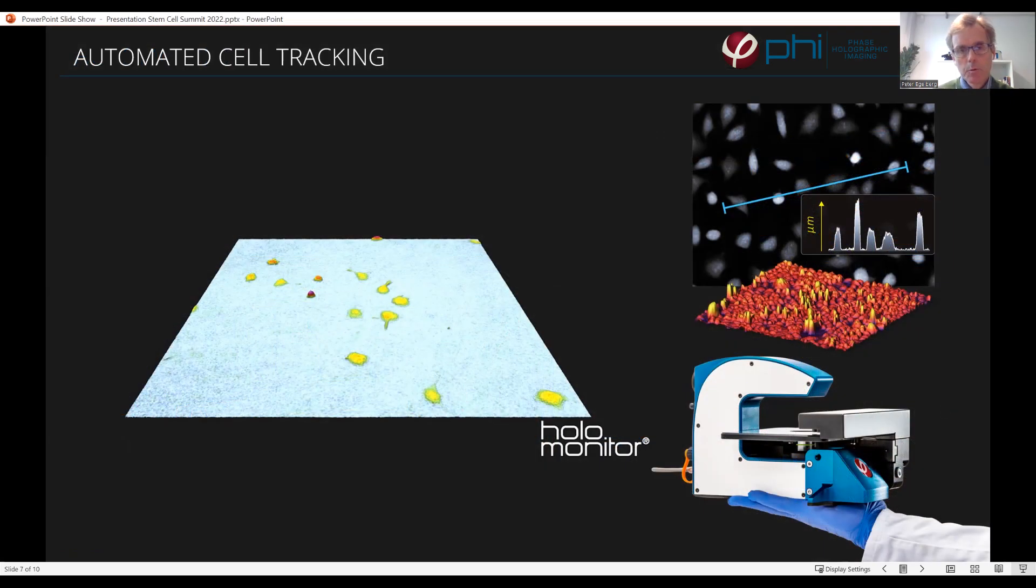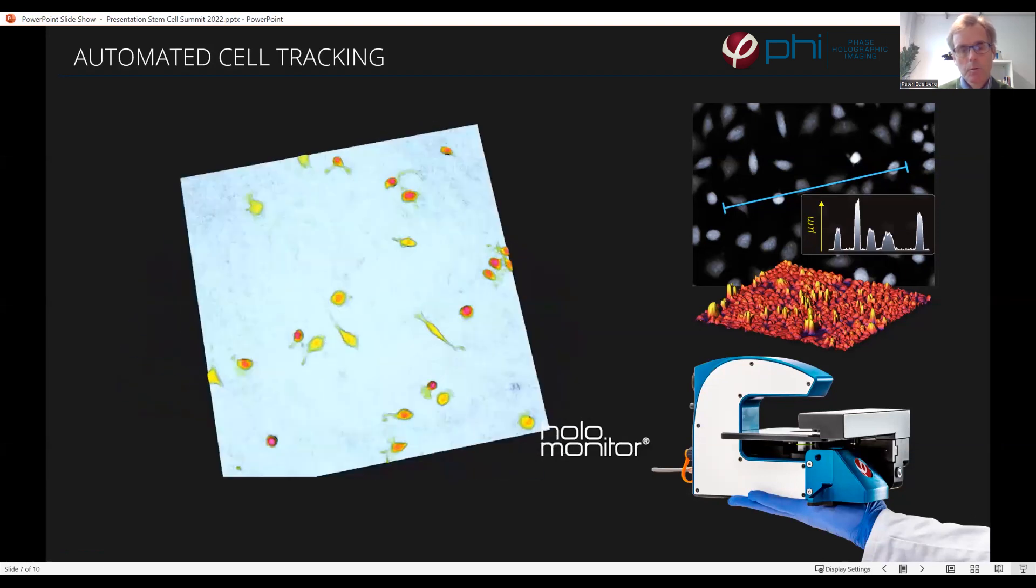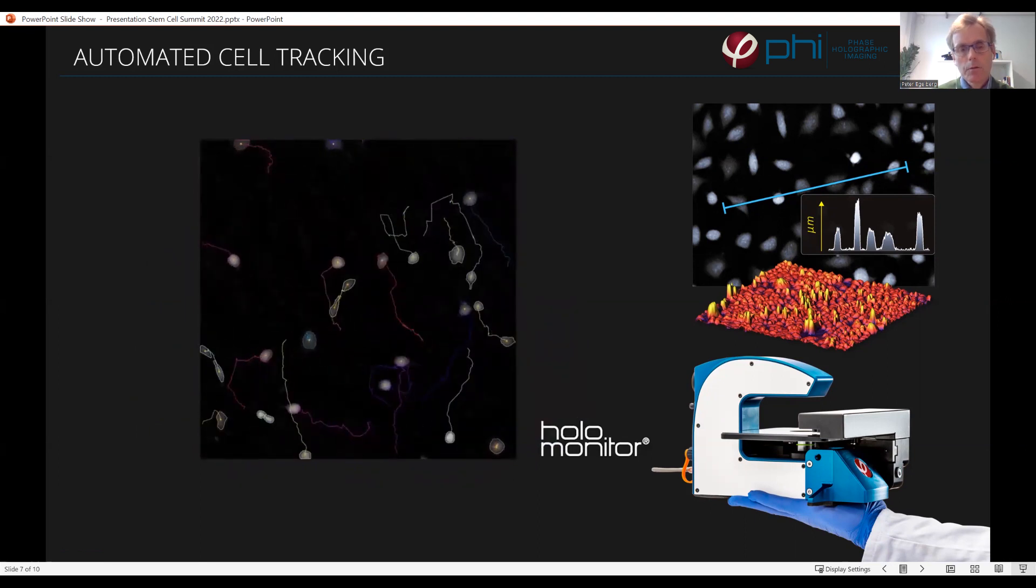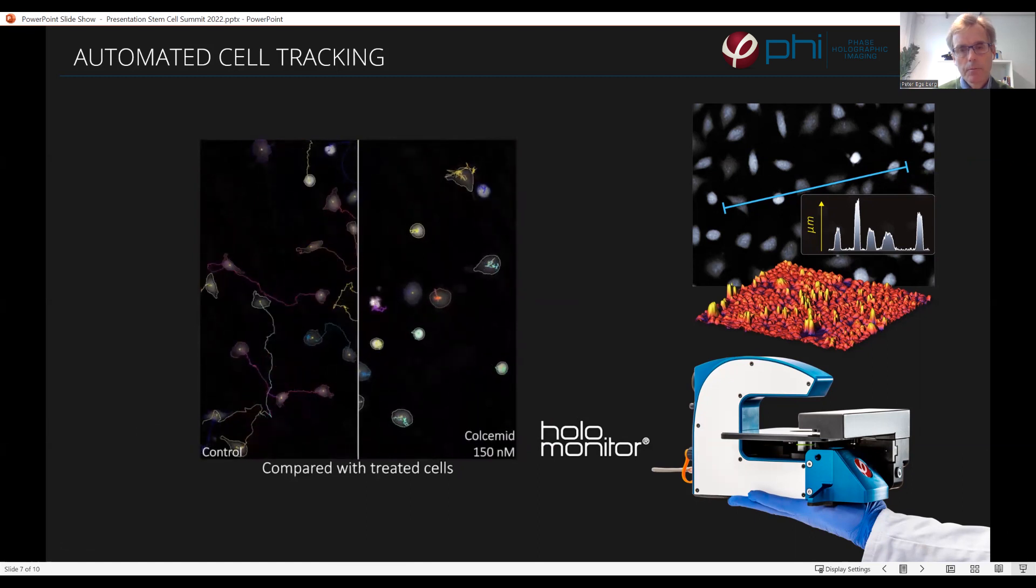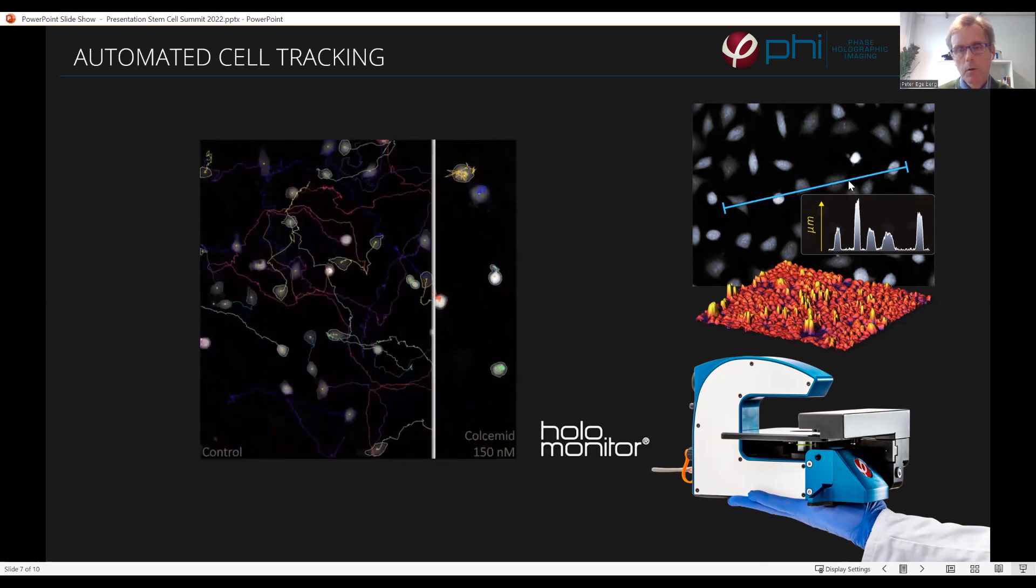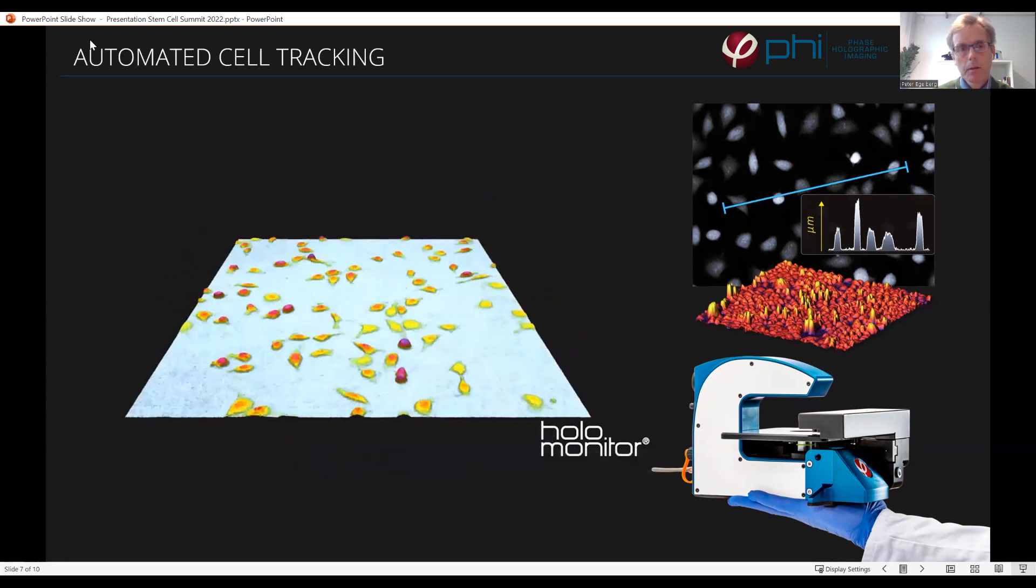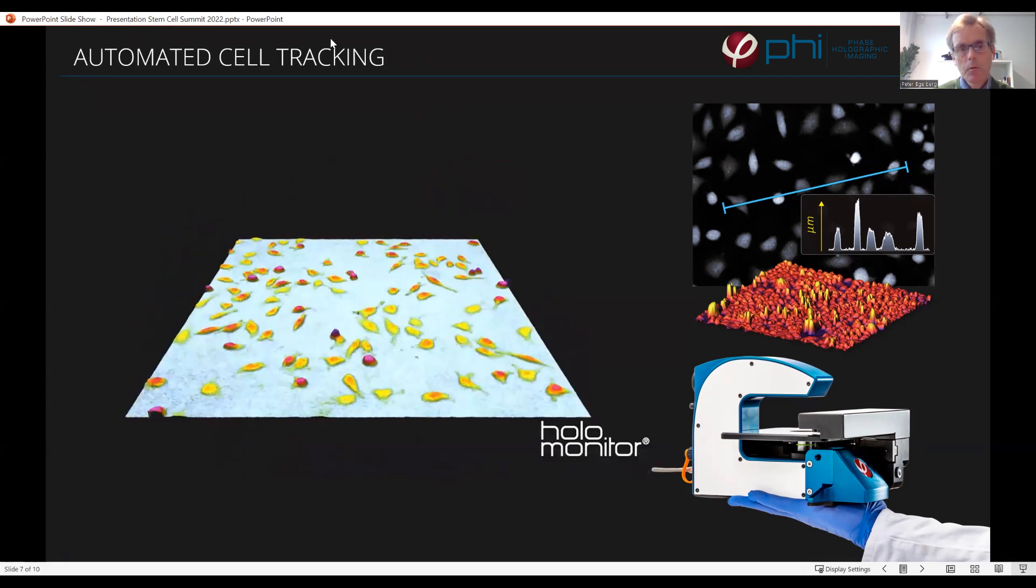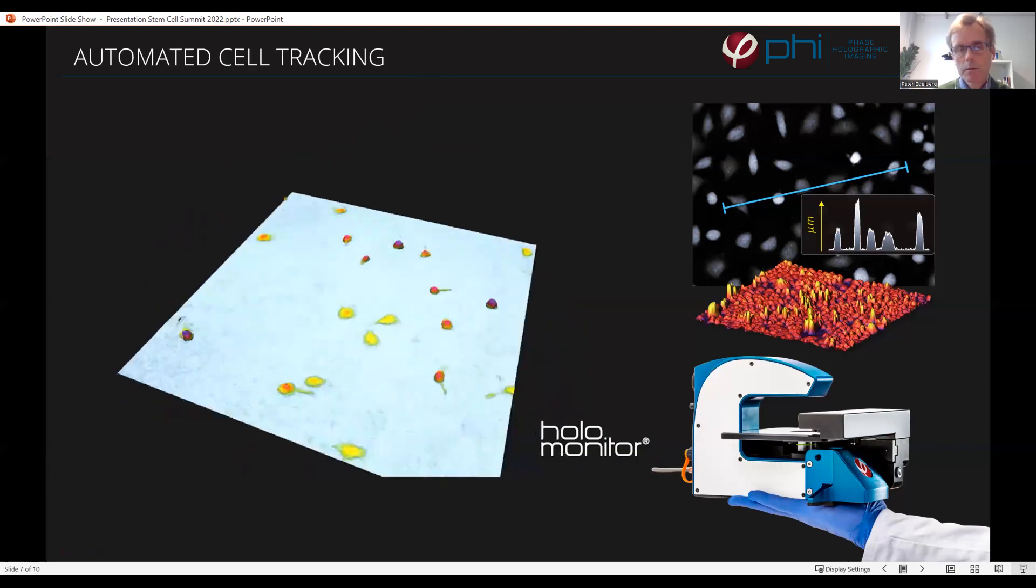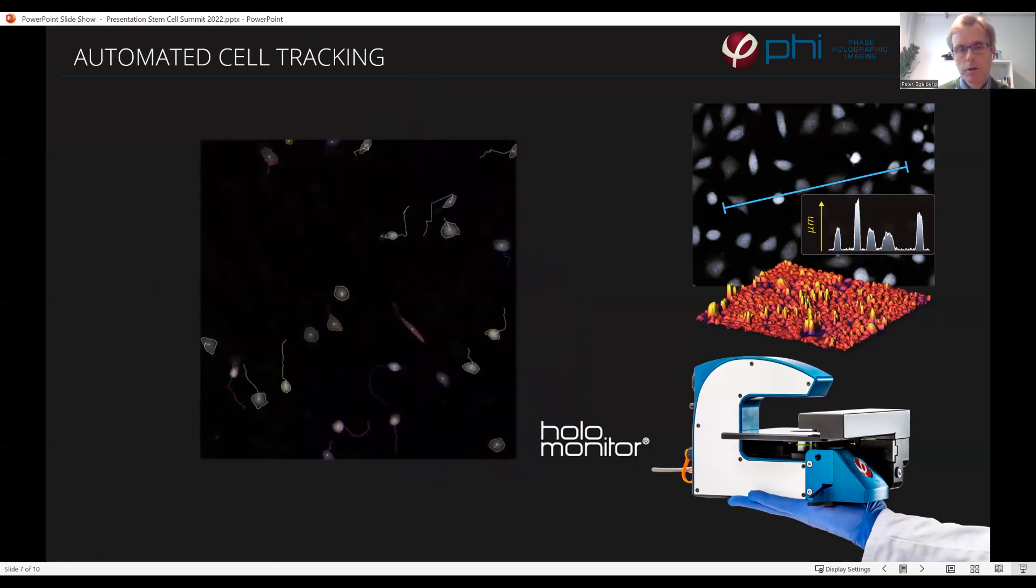The time-lapse movies created by HoloMonitor contain an enormous amount of information. The key to harvest this information is to track the cells. Because the cells are easily identifiable in the holographic images, it's possible to automate the cell tracking. Once tracked, it's possible to study cell division rates, how cells transform, and how they change morphology over time.